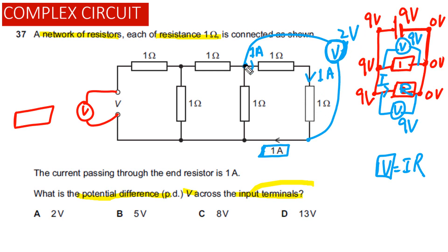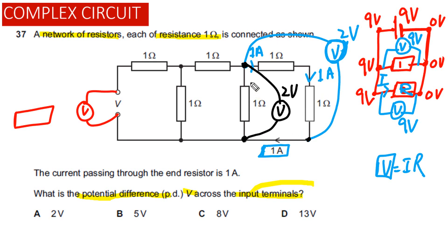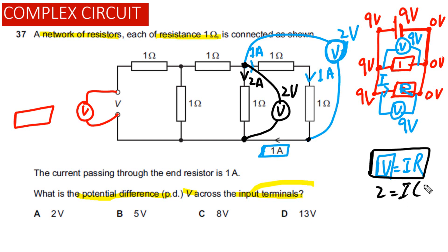If we move the voltmeter to different points but still spanning the same two resistors, the reading will again be equal to 2 volts, because between those points there is only an ideal wire — no loss of energy, no voltage drop. Now, the potential difference across this resistor is 2 volts and its resistance is 1 ohm, so by Ohm's law the current passing through this resistor is equal to 2 amps.